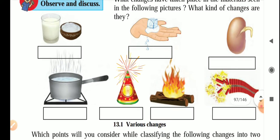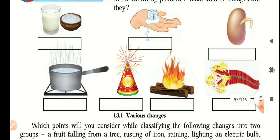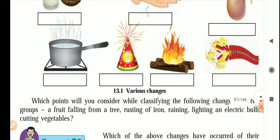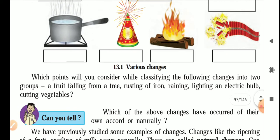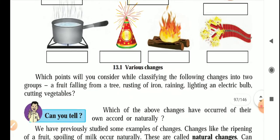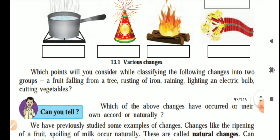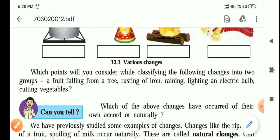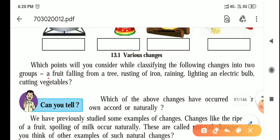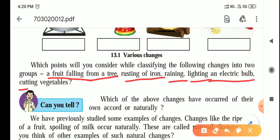Now let's see what these changes are and how we classify them. What points might be considered while classifying these changes? A few more examples are given: a fruit falling from a tree, rusting of iron, raining, lightning and electric bulb, and cutting vegetables.